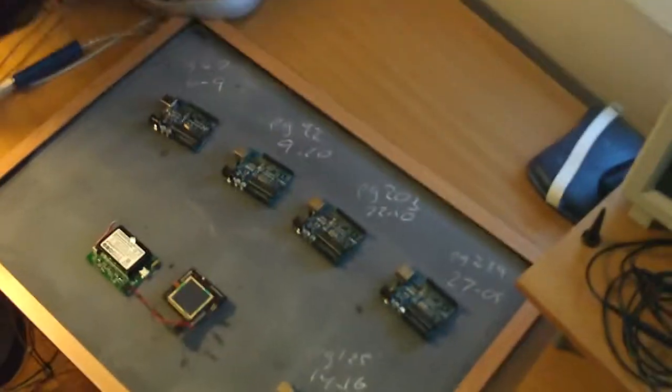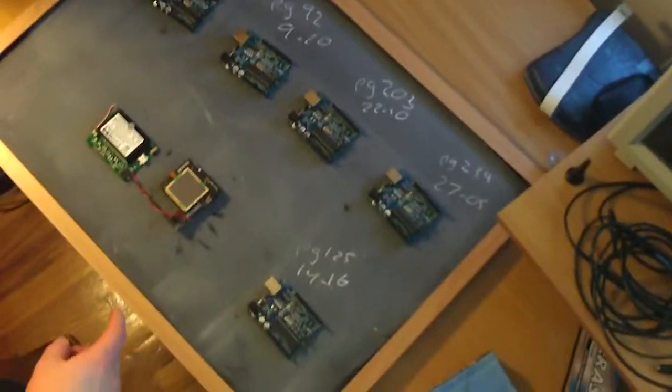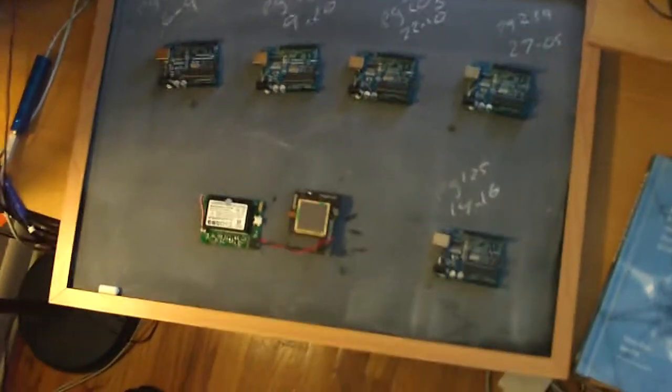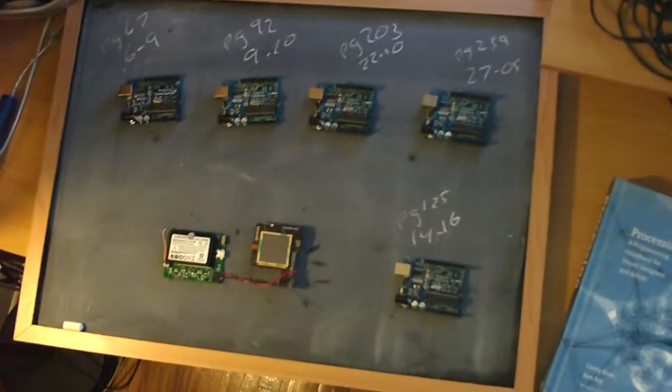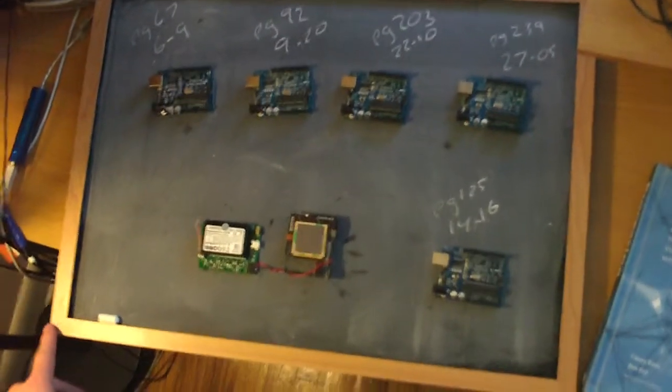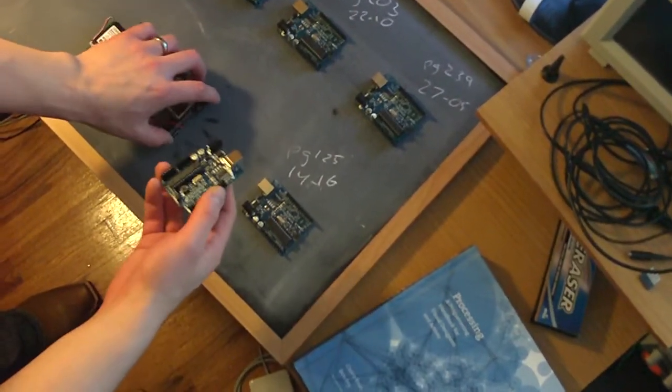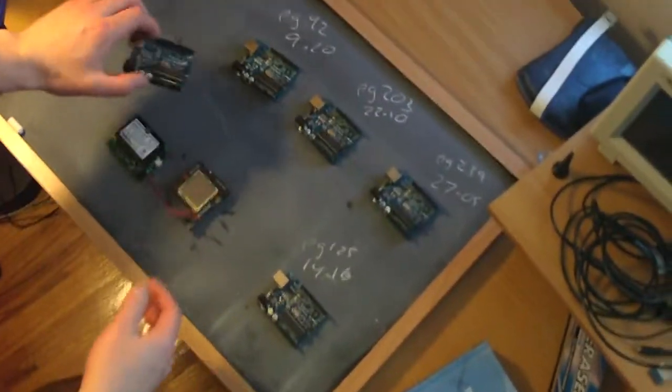Then along came the touch shield, and I guess it made sense to try to port Processing to the touch shield. It took a little while, and I finally got it done the last couple weeks. So this is hot off the press, and I'll definitely be trying to optimize this over time. Each of these Arduinos is running a piece of source code from one of the examples in the book.